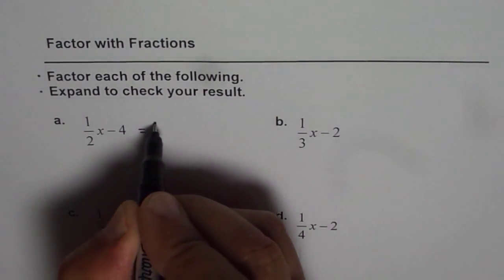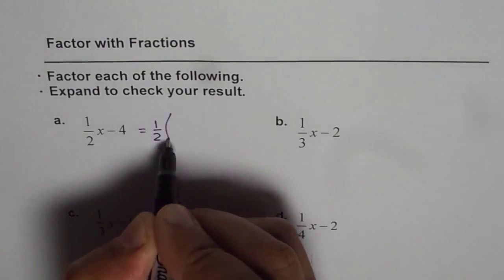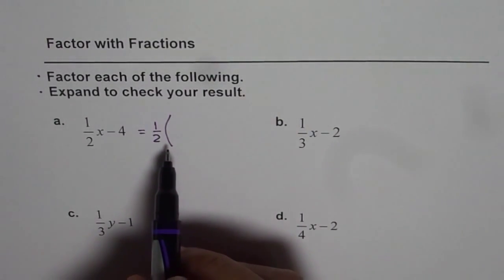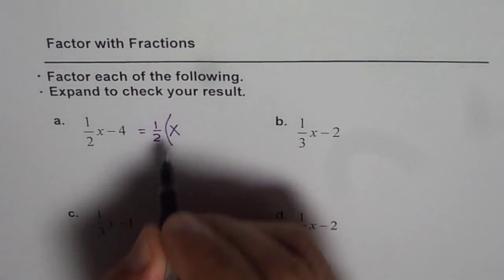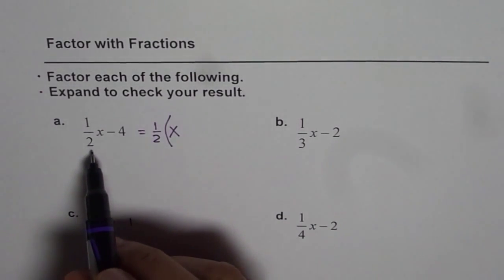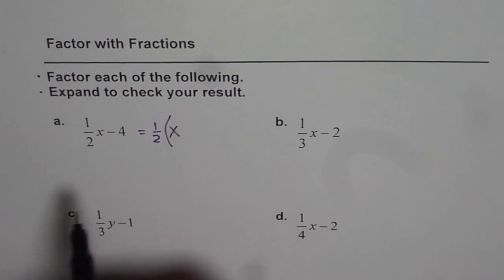So in this case, if I factor 1/2, that means within the brackets we have to write something which should be divided by 1/2. So we have (1/2)x, and since I have factored 1/2, if I divide it by 1/2, what do I get? I am left with x. Dividing by 1/2 is as good as multiplying by 2. So that is what we did to get our result as x.